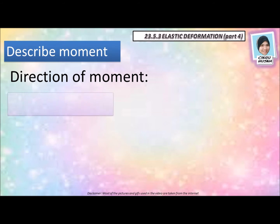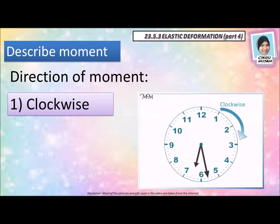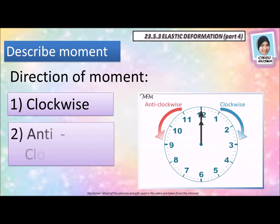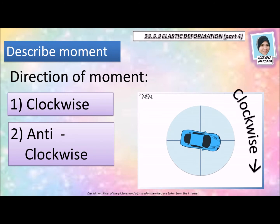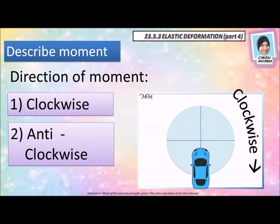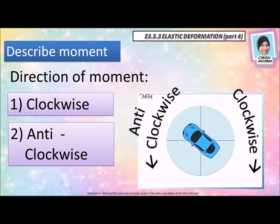The direction of moment — there are two. Number one is clockwise: clockwise moment is when the direction of the turning effect is the same as the motion of a clock. Number two is anti-clockwise moment: anti-clockwise moment is the opposite of the motion of the pointer in the clock. For example, this car is turning clockwise moment, and this time it is turning anti-clockwise moment.